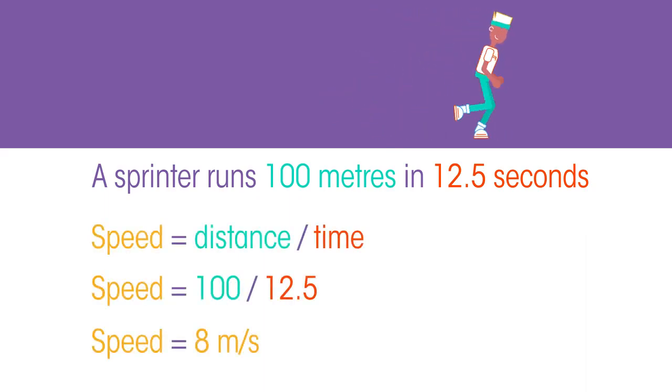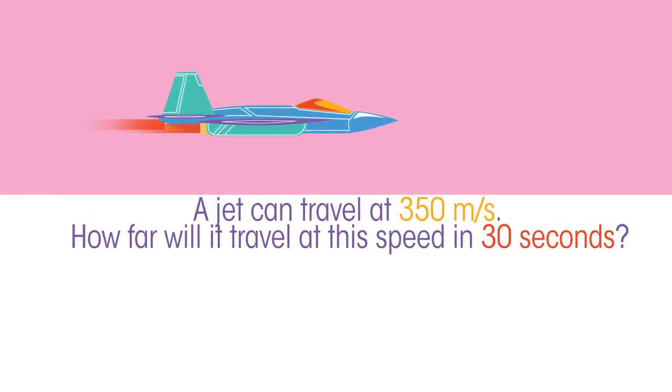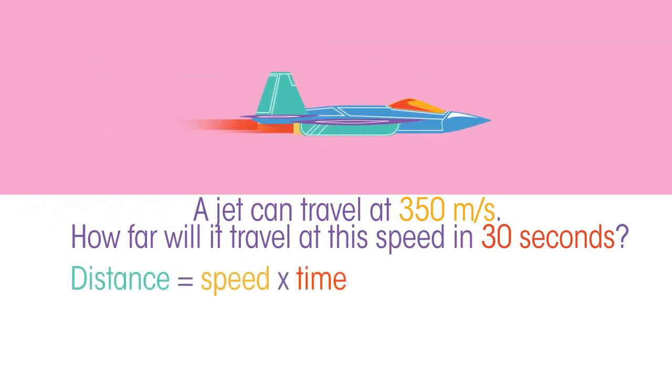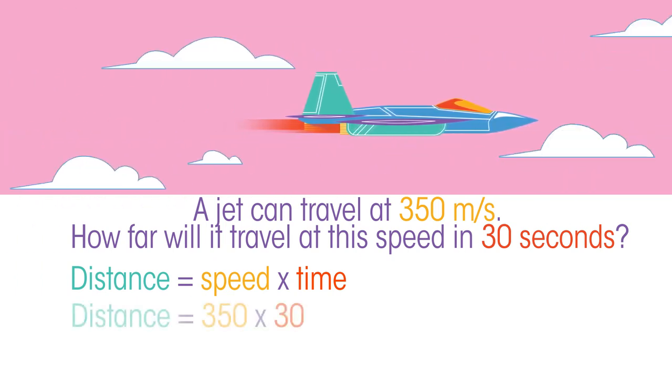And another one: a jet can travel at 350 meters per second. How far will it travel at this speed in 30 seconds? Pause and have a think. Well, it travels 350 meters in one second, so in 30 seconds it will travel 30 times 350, which equals 10,500 meters.